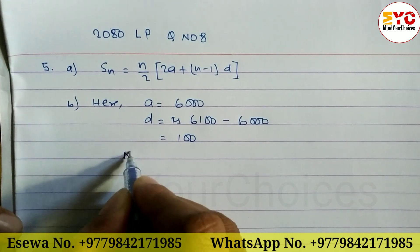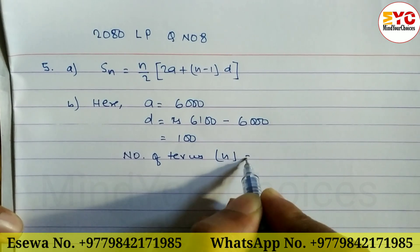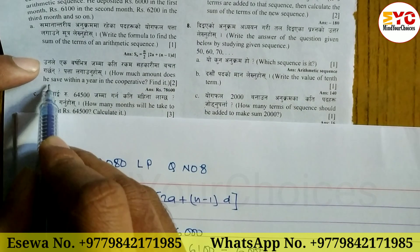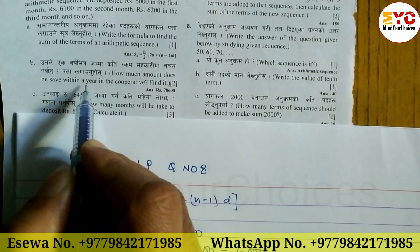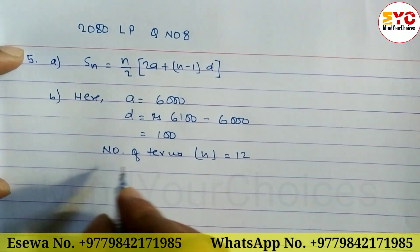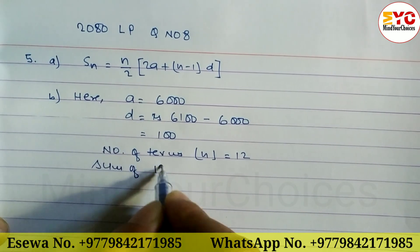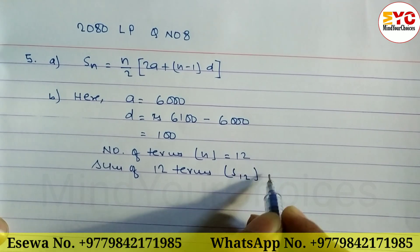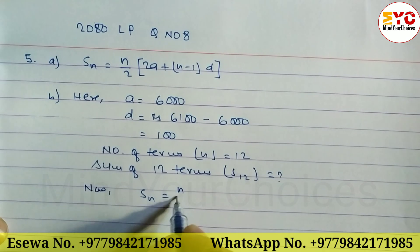The number of terms n is equal to 12, since we need the sum over one year which has 12 months. Now we need to calculate the sum of 12 terms, S12.